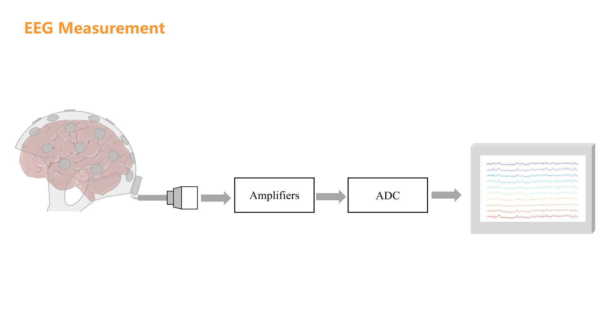Finally, the EEG signal data is processed and analyzed using computer software. This is the general data acquisition process in EEG.